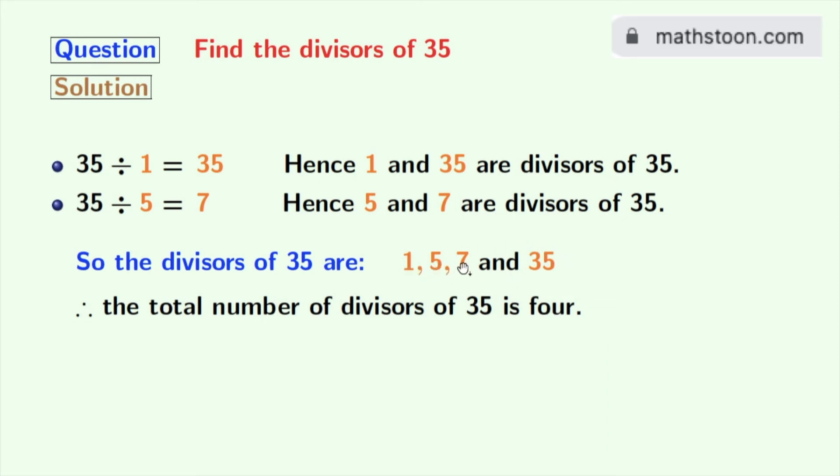5 and 7 among these numbers are prime numbers, because these two numbers do not have any divisor other than 1 and that number itself. So, we can say that the prime divisors of 35 are 5 and 7.